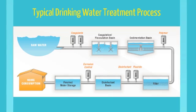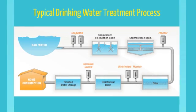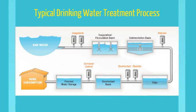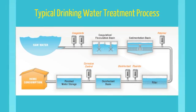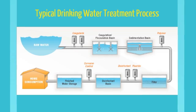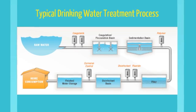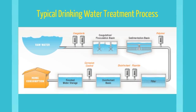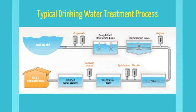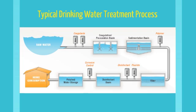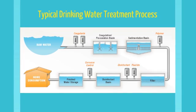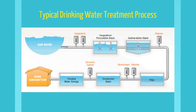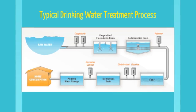Here is an example of a typical drinking water treatment train. The water is taken from a surface water source. A coagulant is added. Flocculation and sedimentation can then take place. After that, the water undergoes filtration and disinfection before traveling to the water distribution system.